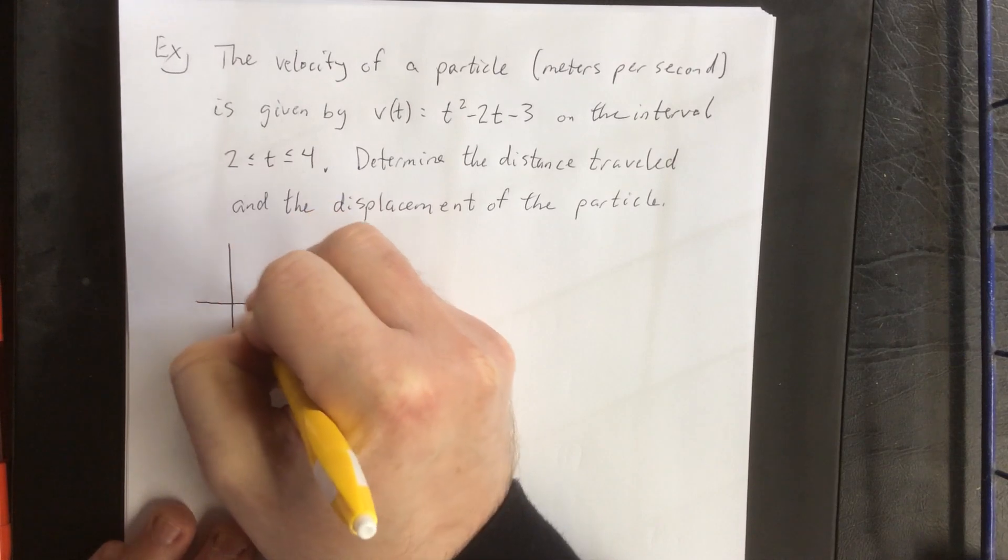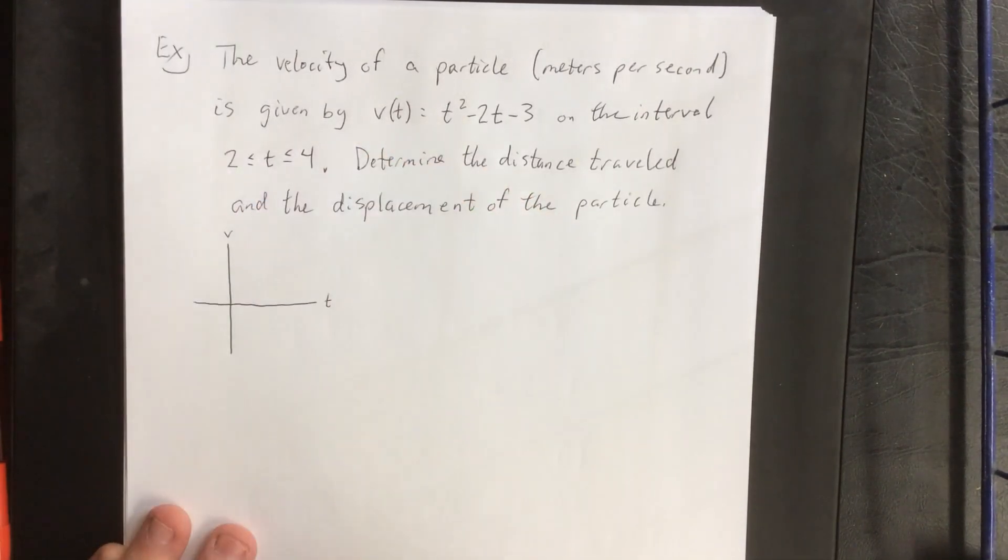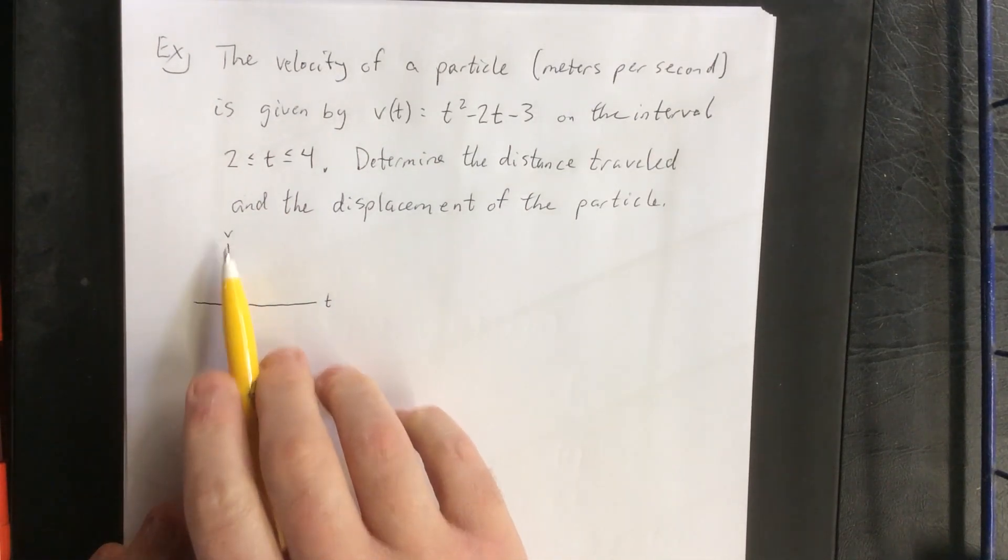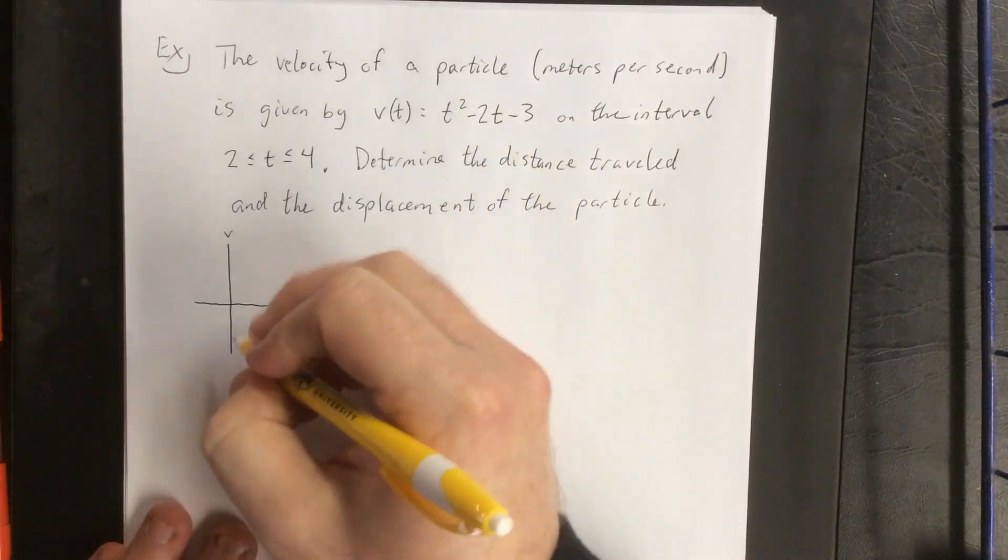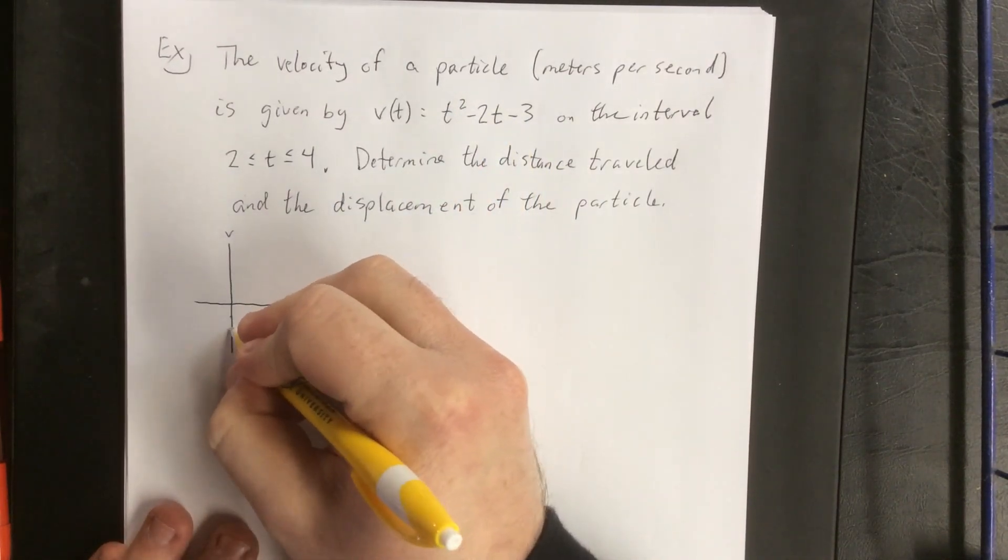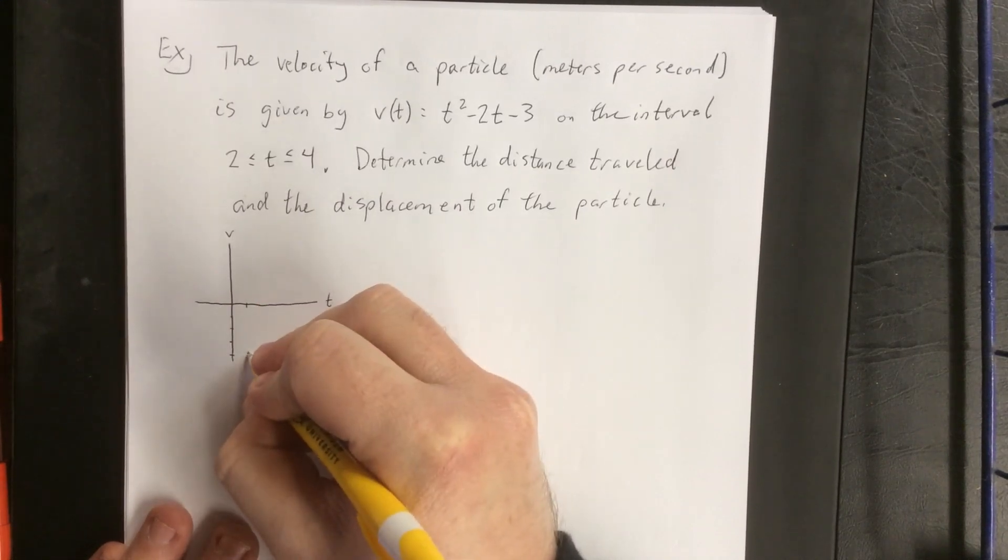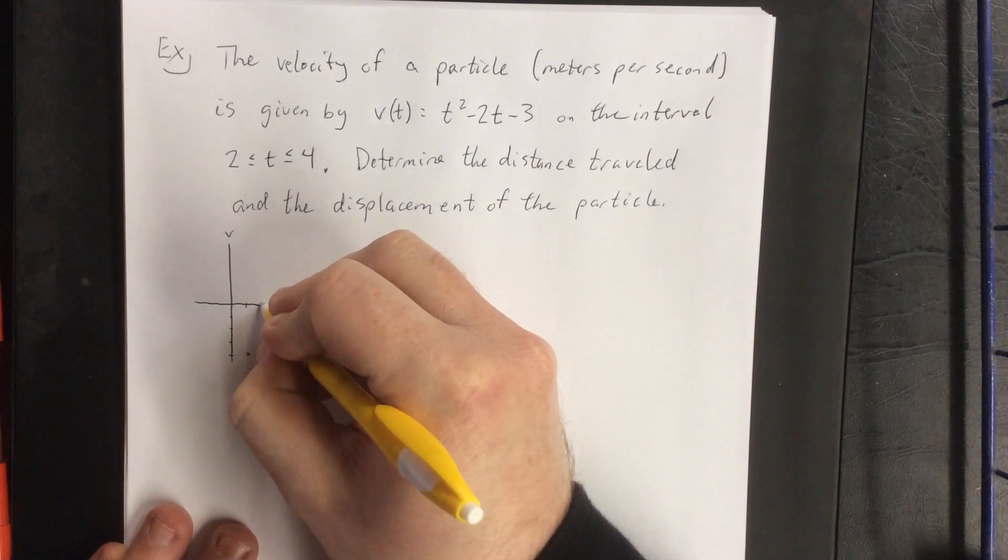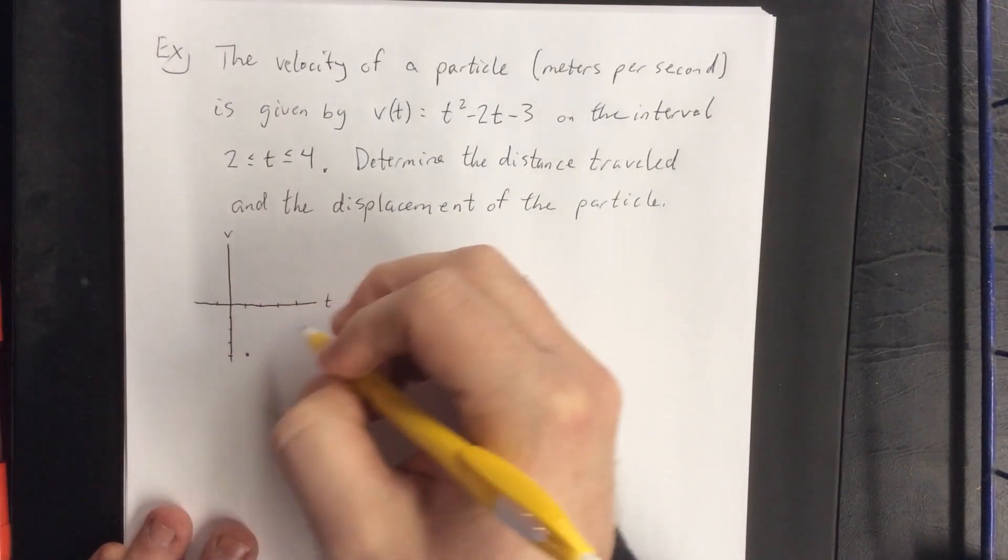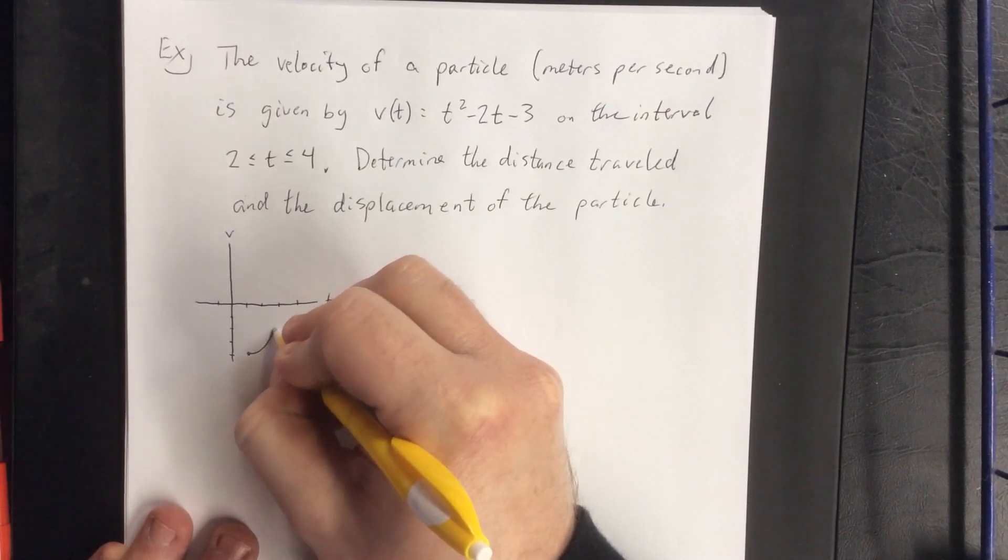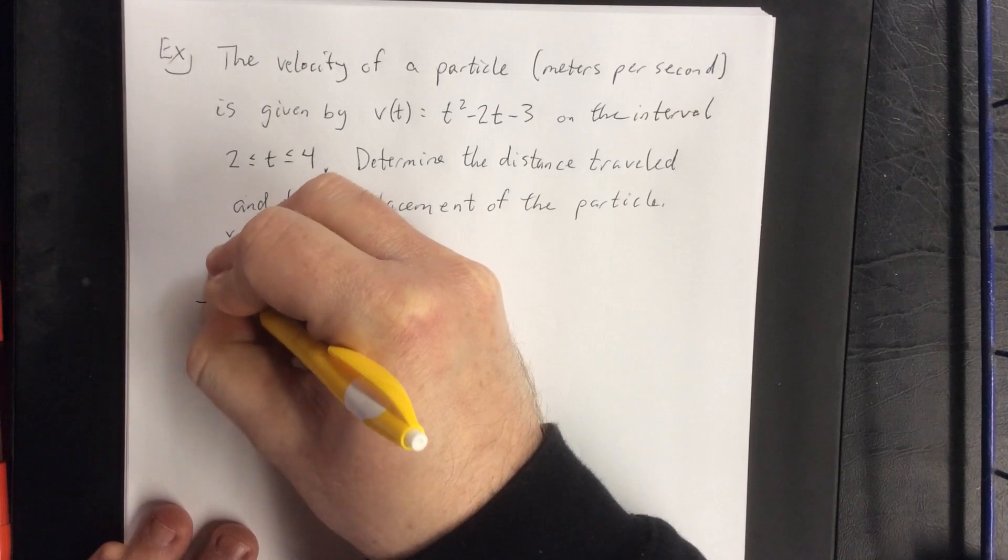So first and foremost I would like to model this all together. t will be our horizontal axis and v will be our vertical axis. If you were to complete the square on this, you would see that this is a parabola with a vertex at 1, -4 and that this thing has an intercept at both t = -1 as well as t = 3. So something along these lines.